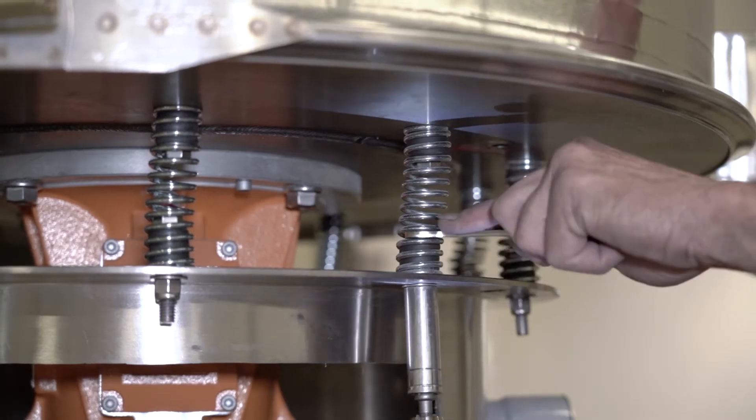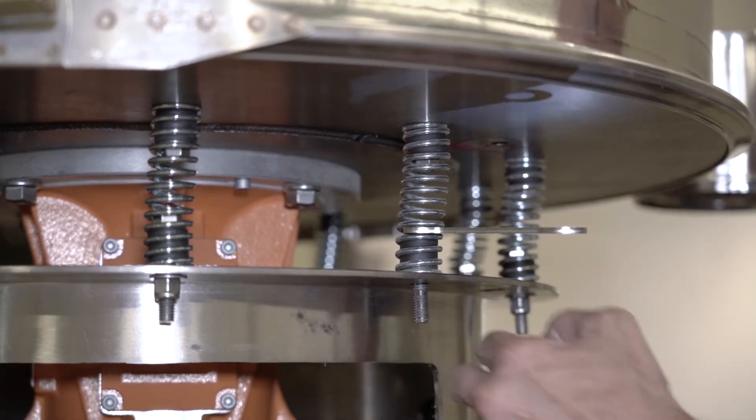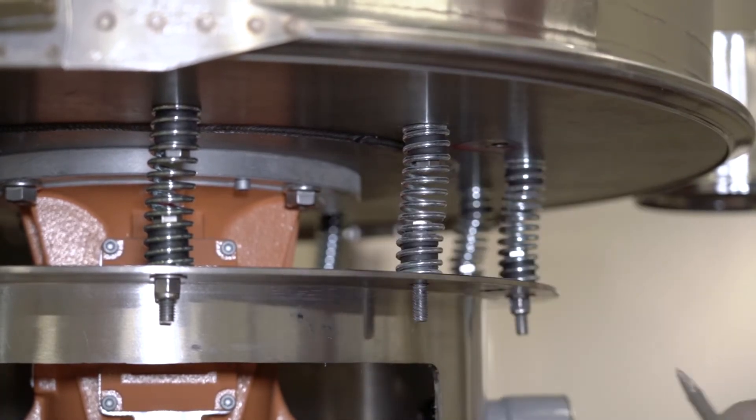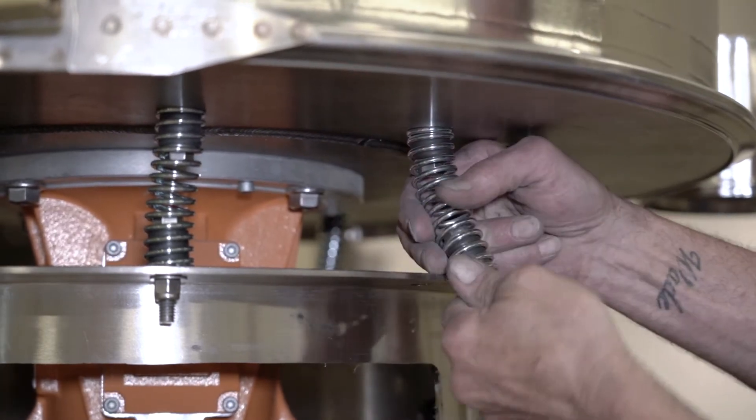When replacing a spring, you must first unscrew the nut on the bottom. Once you have done that, you can now push the bolt up and pull it out of the spring.